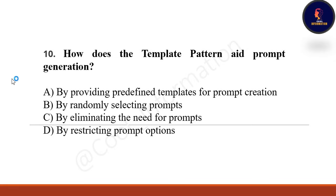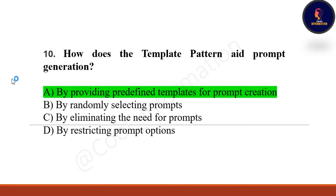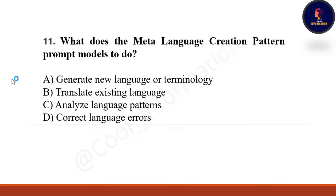Next question: How does the template pattern aid prompt generation? Option A: by providing predefined templates for prompt creation. Option B: by randomly selecting prompts. Option C: by eliminating the need for prompts. Option D: by restricting prompts. Correct option is A — by providing predefined templates for prompt creation.